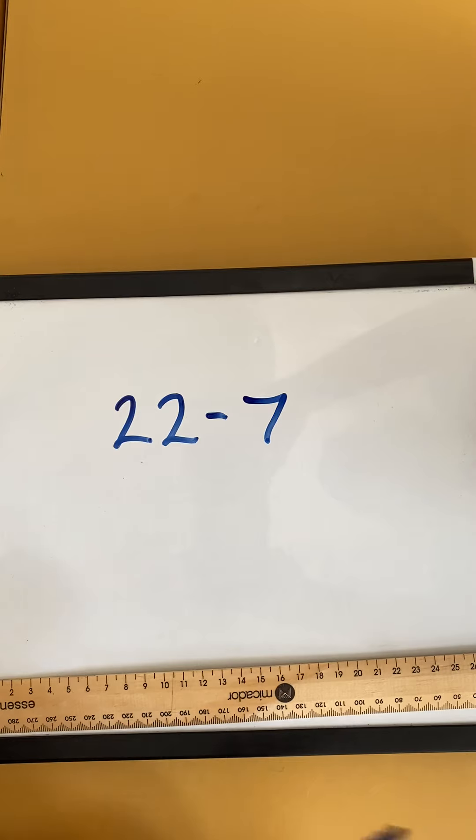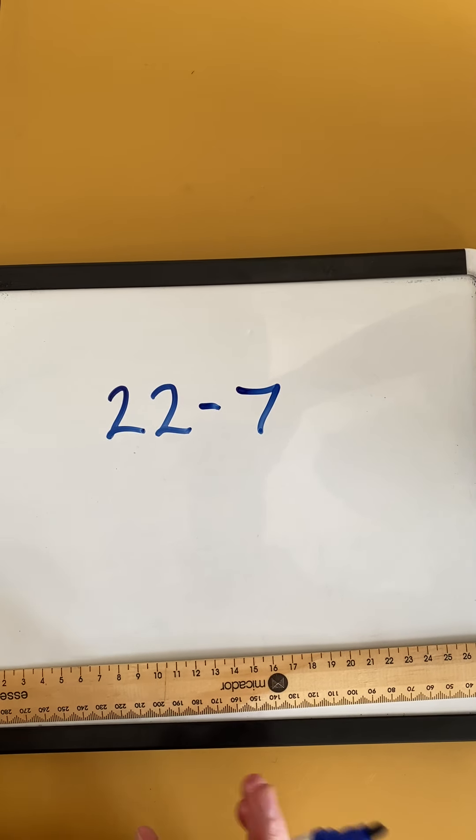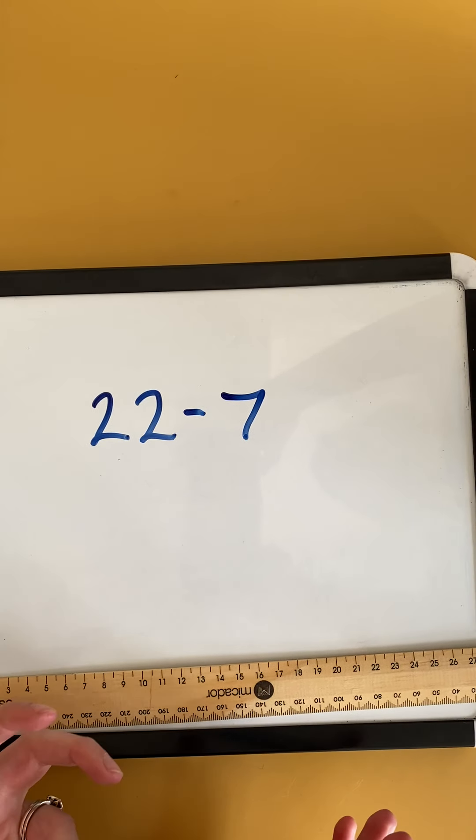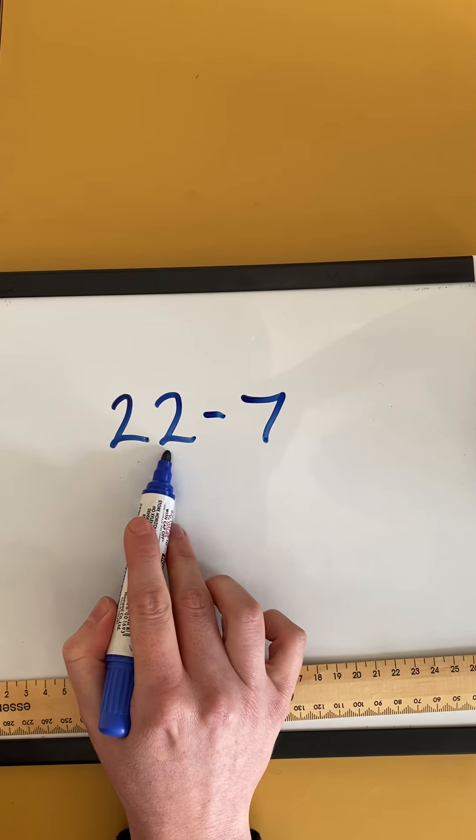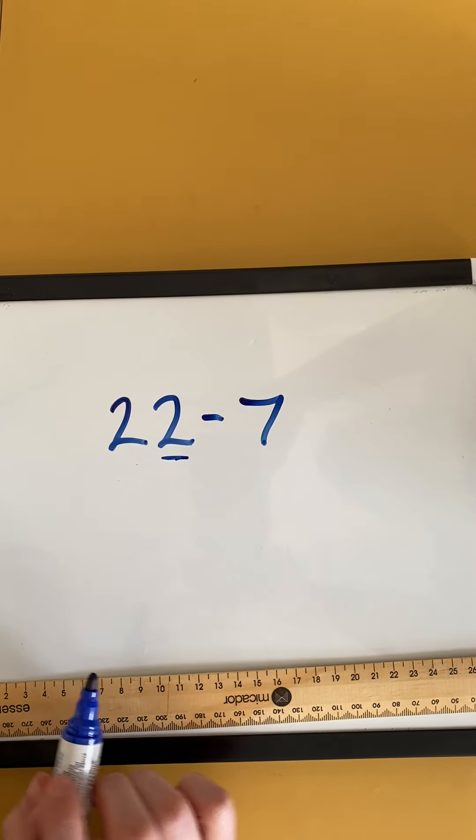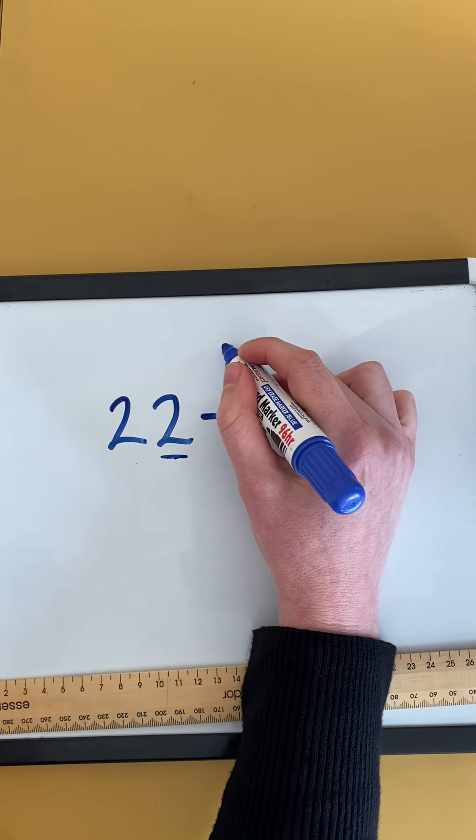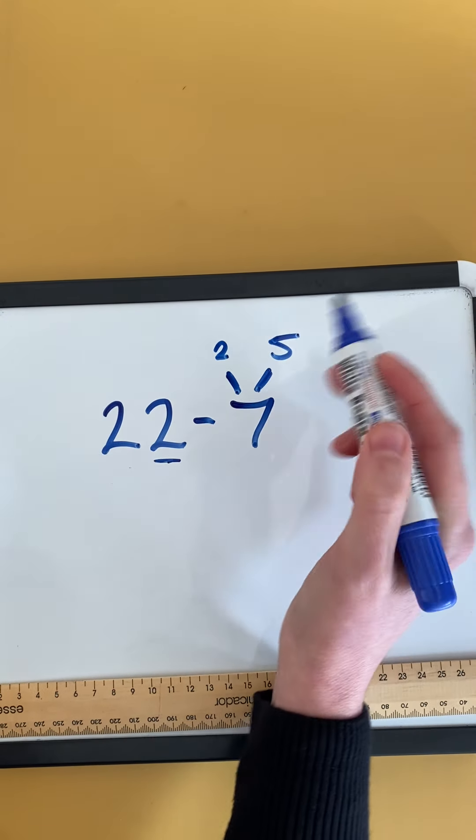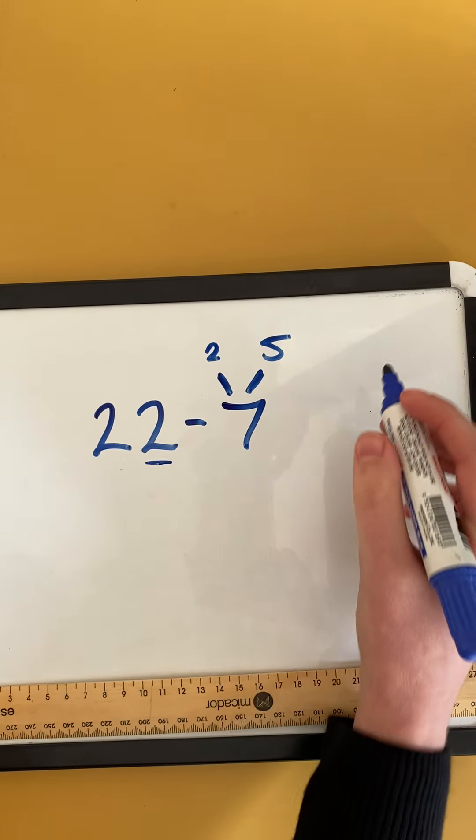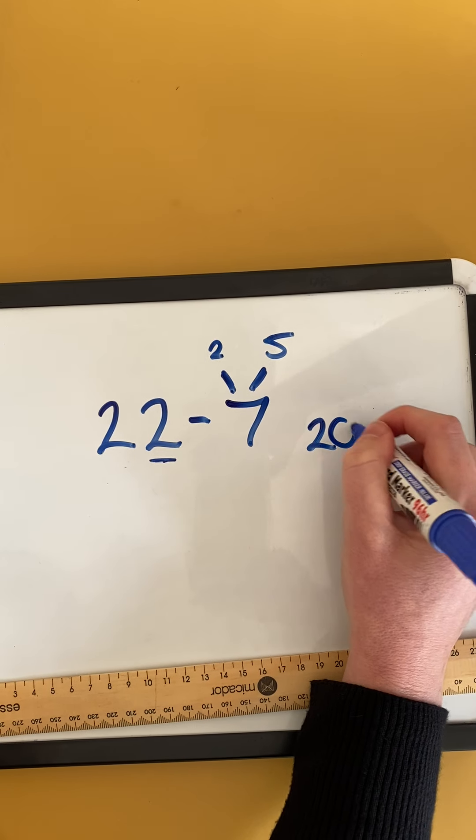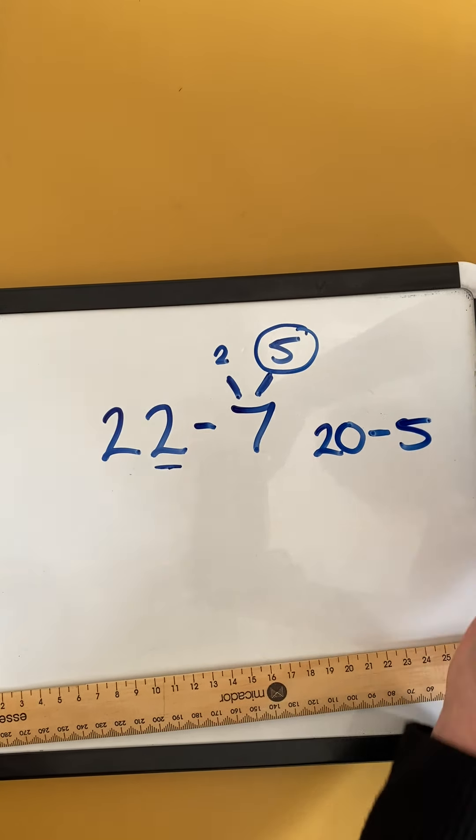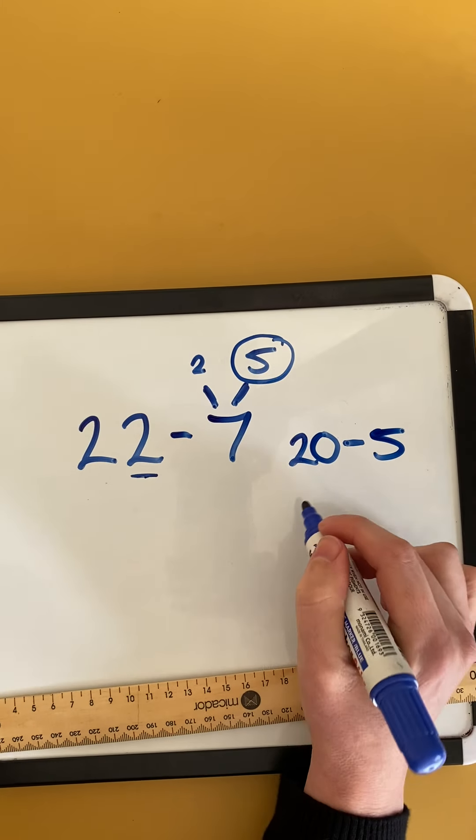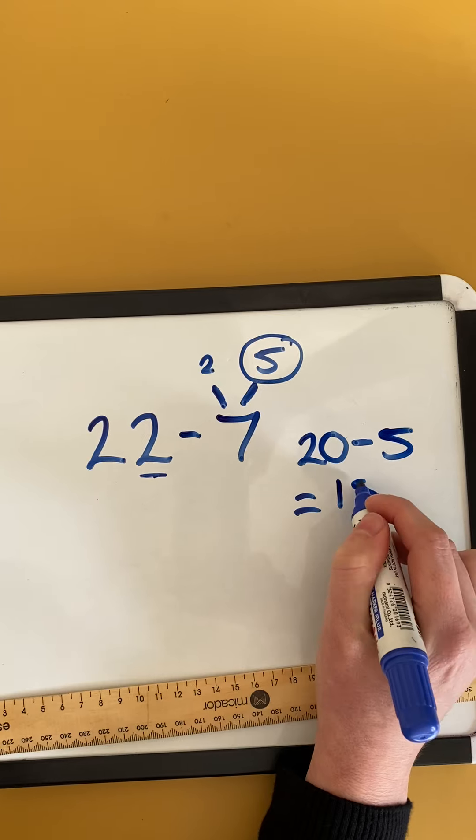So again, with our bridging strategy, we want to make our number close to a 10. So I'm going to make this one 20. So I need to take away this 2 to make it 20. So I'm going to break my 7 into 2 and 5 because that 2 then gets rid of that one. And I have 20 take away what's left, 5. And I know 20 take away 5 equals 15.